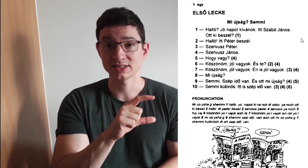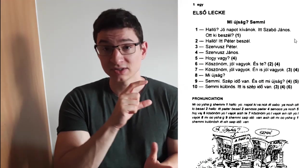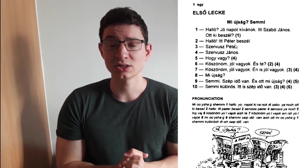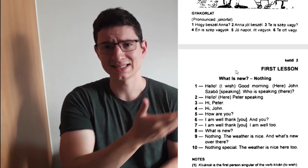Now the first book on my list is definitely Asimil Hungarian with Ease. This method is for teaching languages through listening and reading. On one side you have the text in your target language, in this case in Hungarian. So for example in the first chapter you have a short text in Hungarian. You have the same text translated into English or your native language.